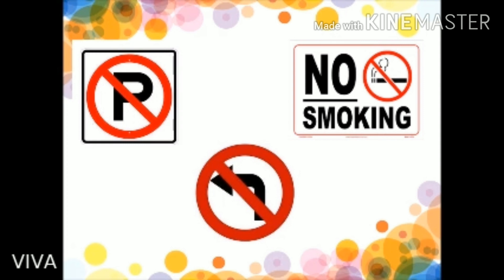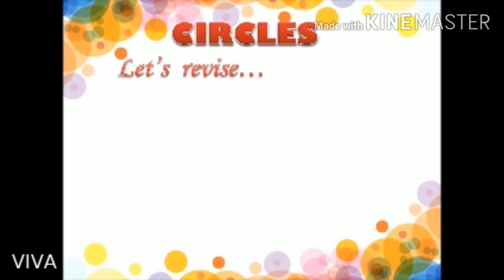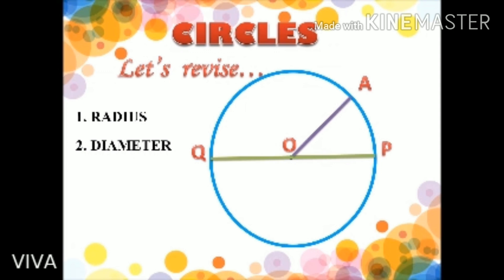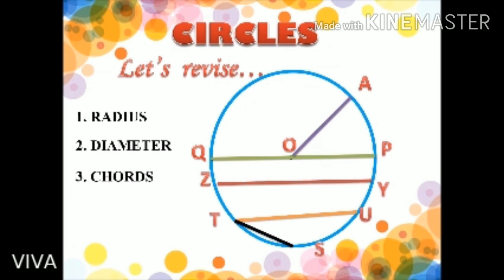Till now, we have seen: the radius, which is a line segment from the center of the circle to any point on the circle; the diameter, which is a line segment passing through the center of the circle whose end points lie on the circle; and the chord, which is a line segment whose end points lie on the circle.